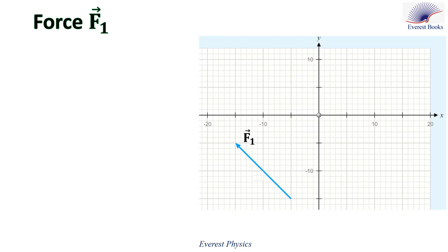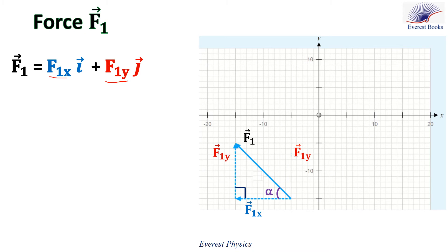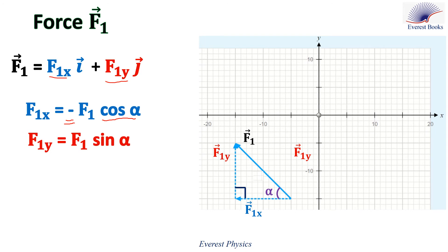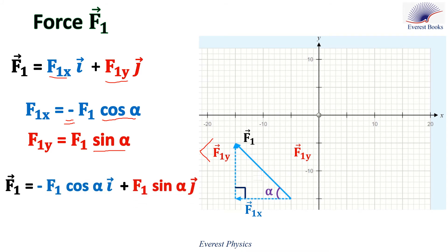Let's find the components of some forces. Let's start with force F1, drawn in the figure. F1x is the x component and F1y is the y component. F1x makes an angle alpha with the negative x axis, so F1x equals minus F1 cosine alpha. The x component is negative because it is directed in the negative x direction, and we use cosine alpha because F1x is adjacent to angle alpha. F1y equals F1 sine alpha, and is positive because it is directed in the positive y direction. Then F1 equals minus F1 cosine alpha i plus F1 sine alpha j.